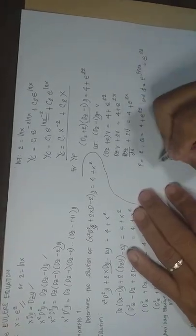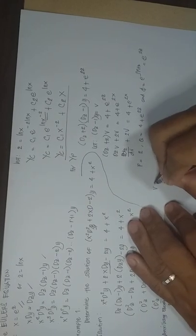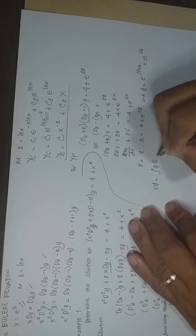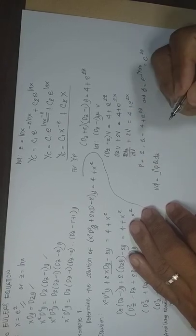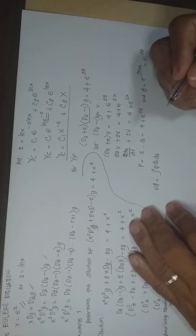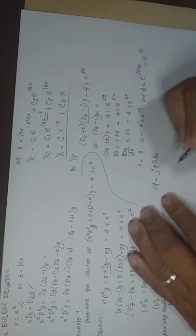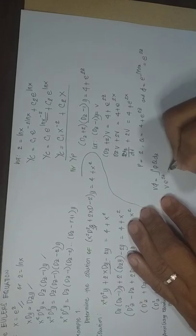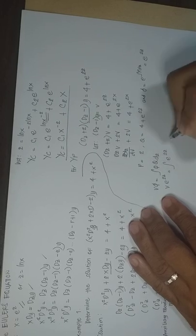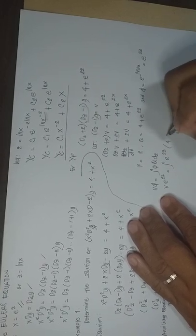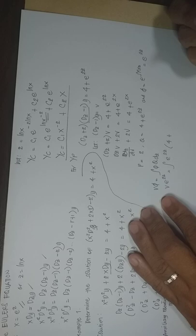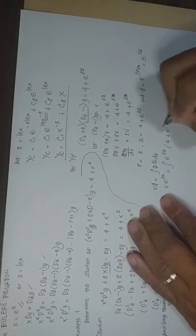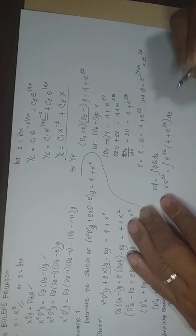The solution is: V·φ = ∫φ·Q dz (with C omitted for the particular integral). So V·e^(2z) = ∫e^(2z)·(4 + e^(2z)) dz.